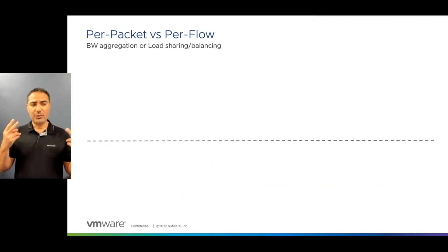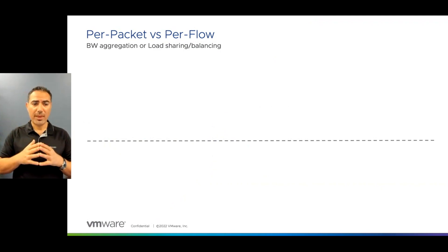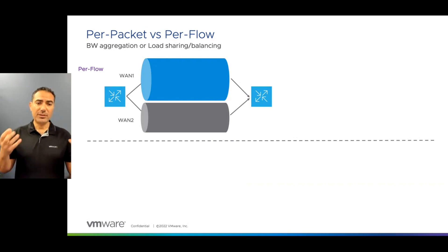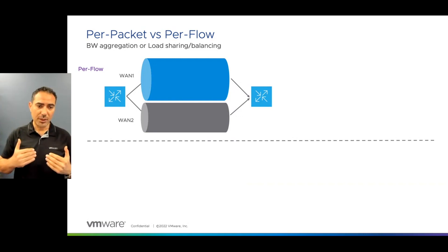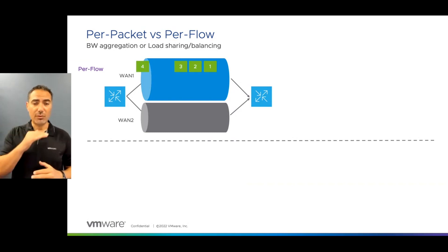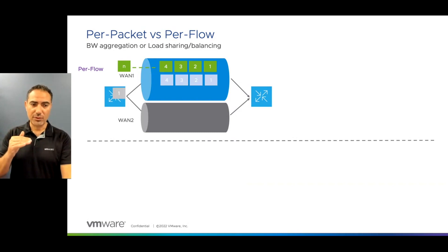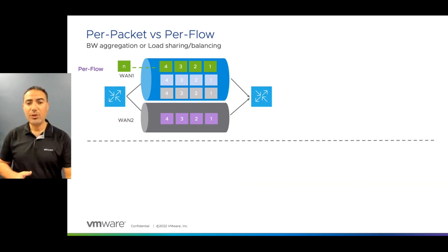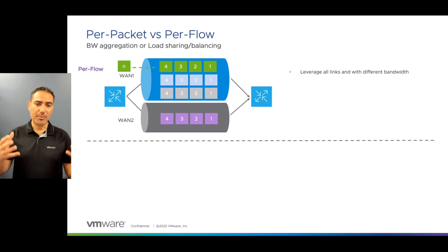There are two different technologies: per-packet and per-flow. Before I describe how per-flow works, let me set the stage for this diagram. We have two SD-WAN devices and two circuits between them. Circuit number one is three times bigger than circuit number two. When the per-flow SD-WAN device receives a flow, it selects one of the circuits for the whole entire flow, and it keeps doing this for three flows — because circuit one is three times bigger than circuit two — before it starts using circuit number two.